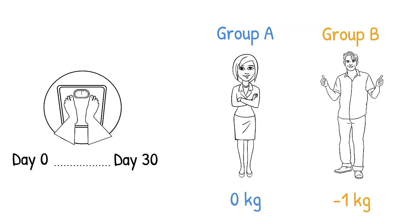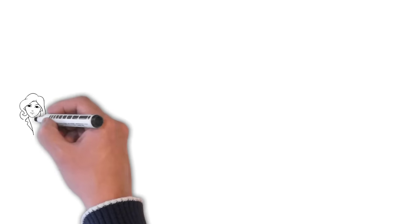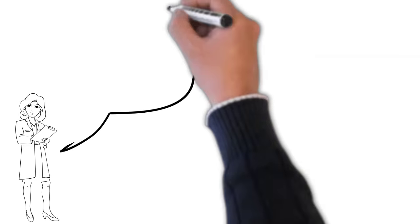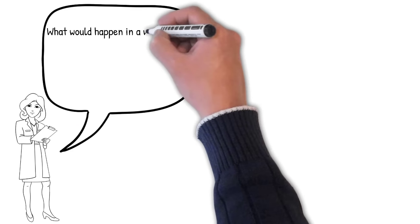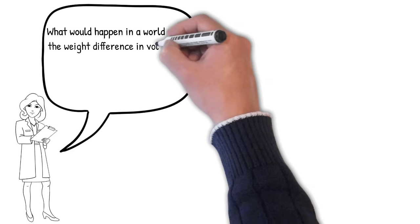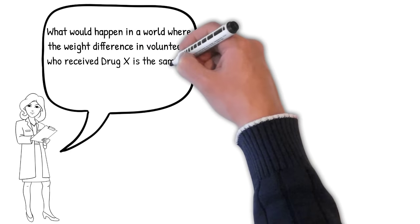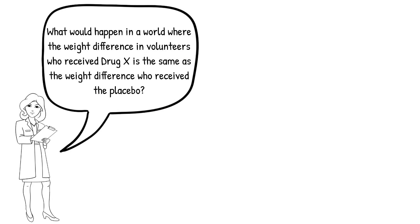So does this mean that the drug worked? To determine this, we first ask ourselves, what would happen in a world where the weight difference in volunteers who received drug X is the same as the weight difference in those who received the placebo? This is where the null hypothesis comes in.